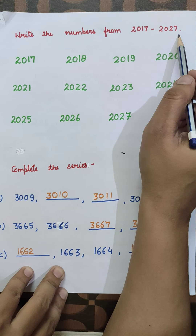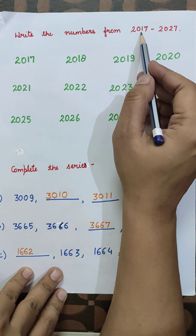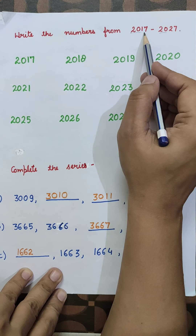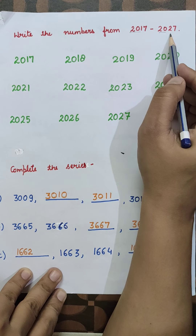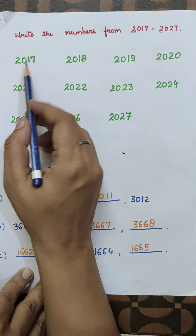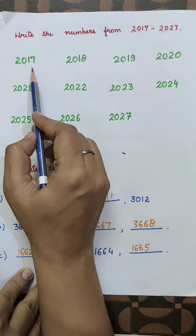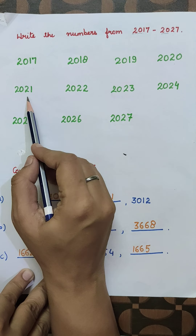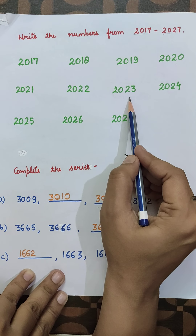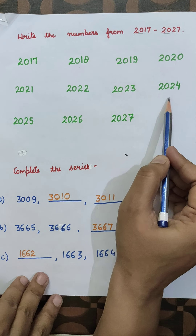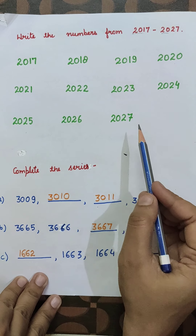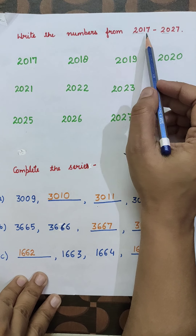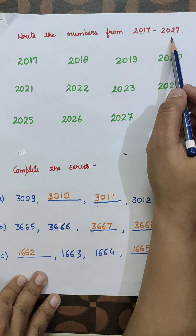From 2017 to 2027, starting from 2017: 2017, 2018, 2019, 2020, 2021, 2022, 2023, 2024, 2025, 2026, and 2027. These are the numbers which come in between 2017 and 2027.